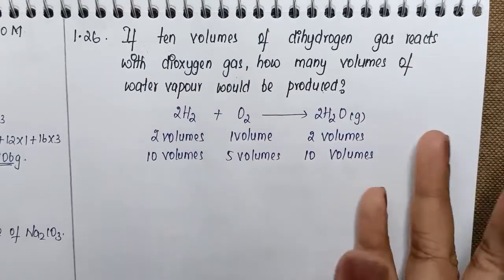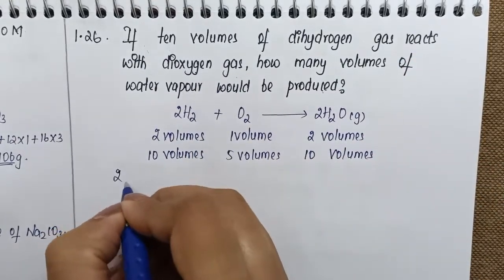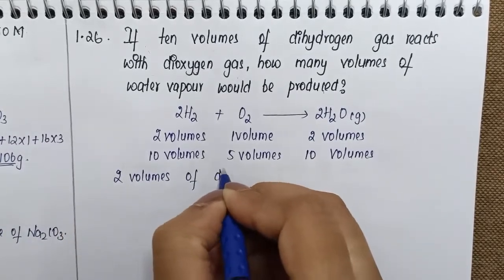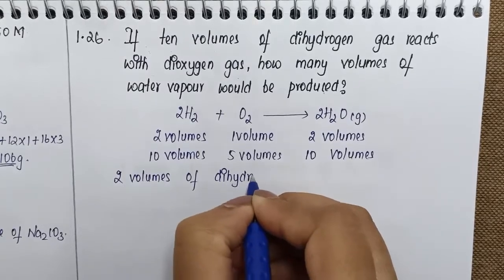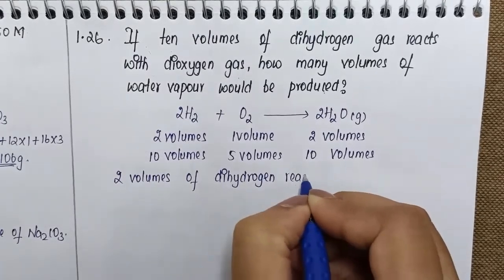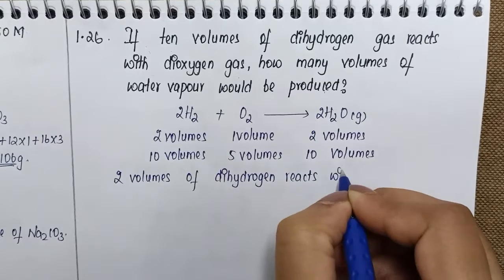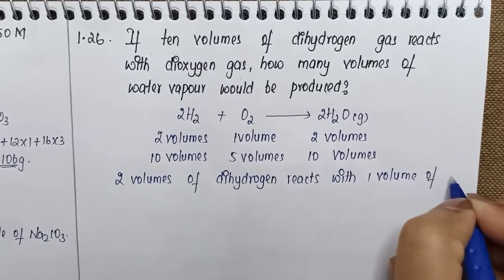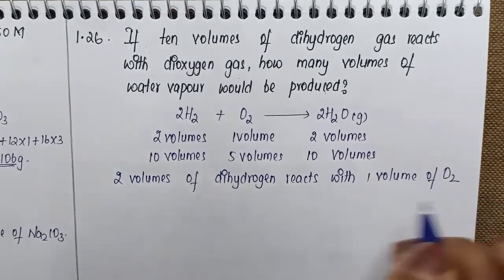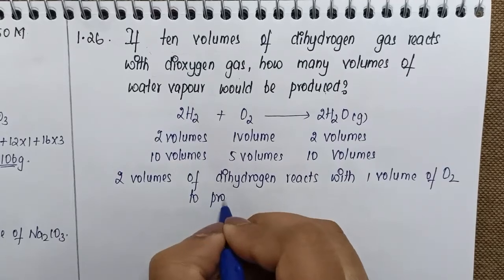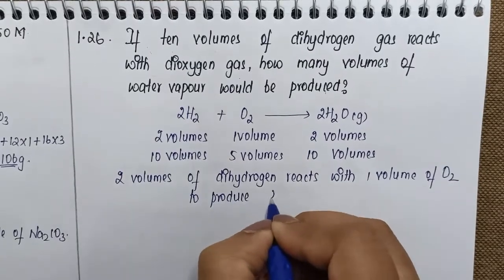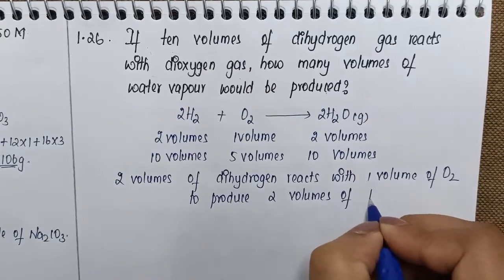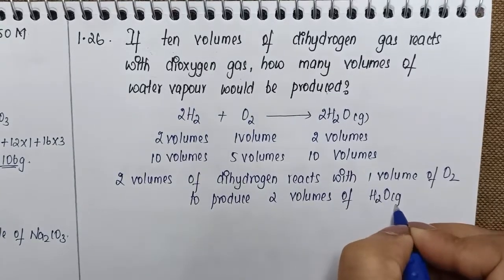We can write that in terms of words also. Two volumes of dihydrogen reacts with one volume of oxygen to produce two volumes of water vapor. Therefore...